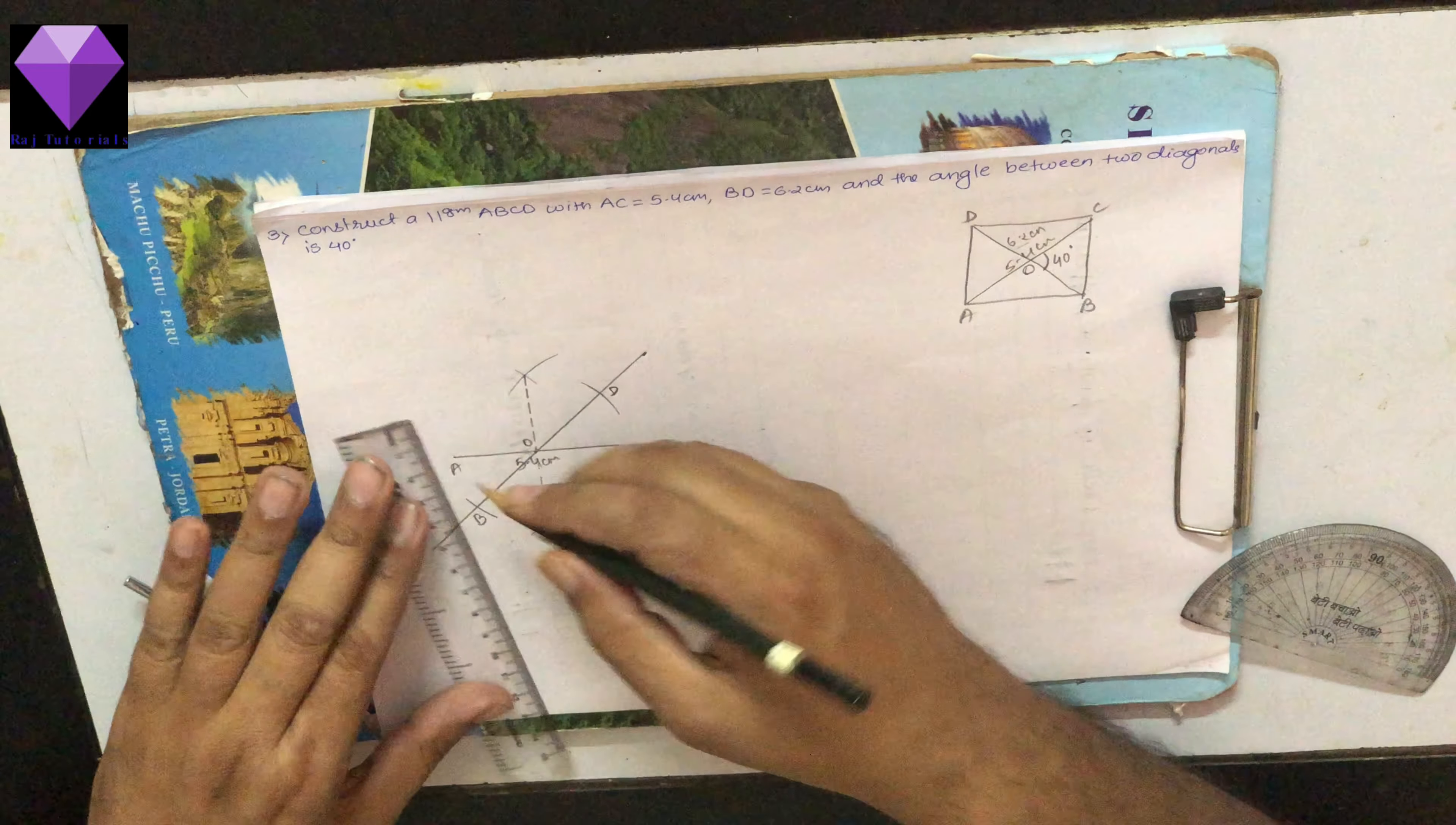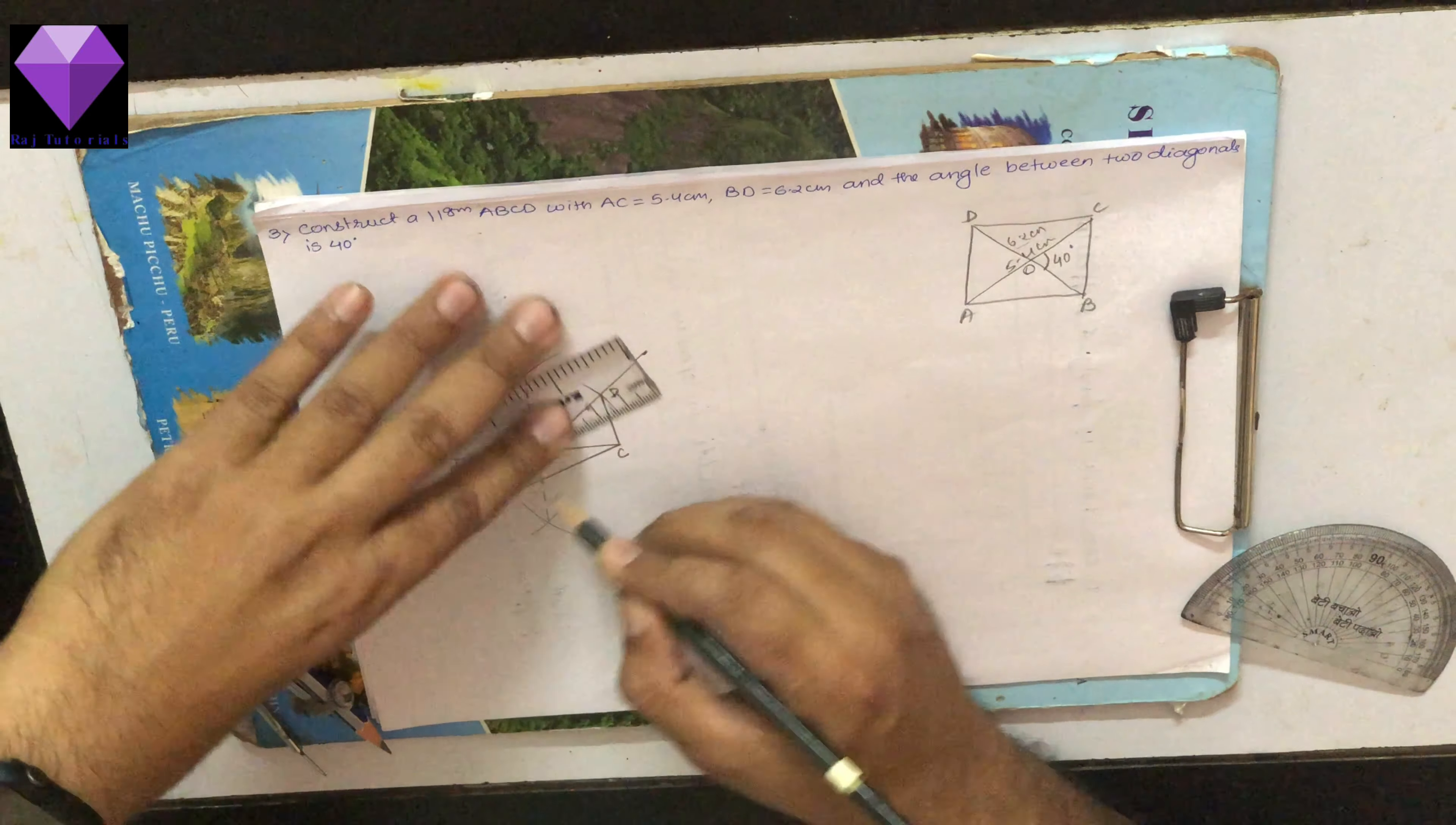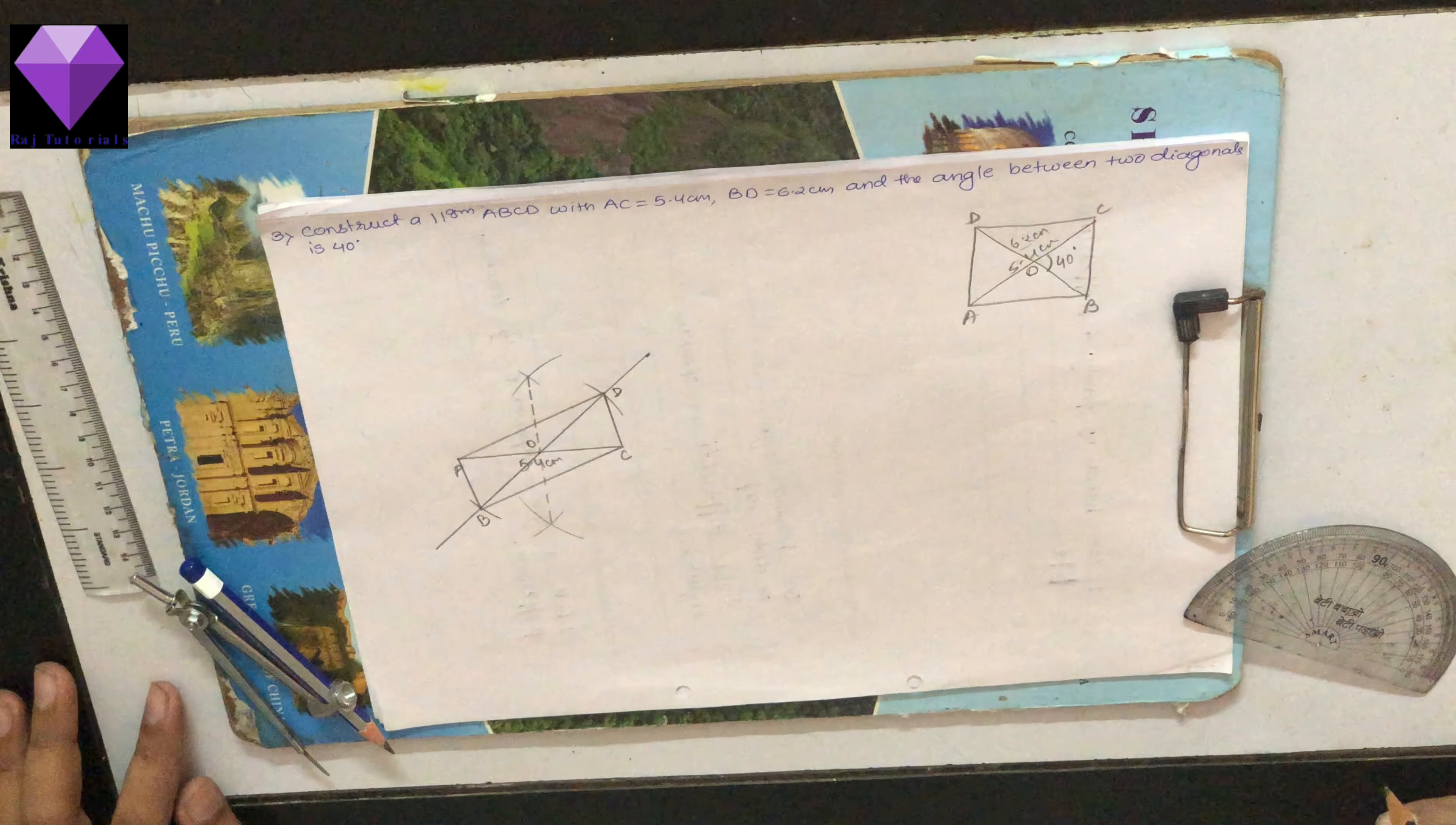Now I will join AB, I will join DC, I will join BC and I will join AD. So my parallelogram ABCD is ready.